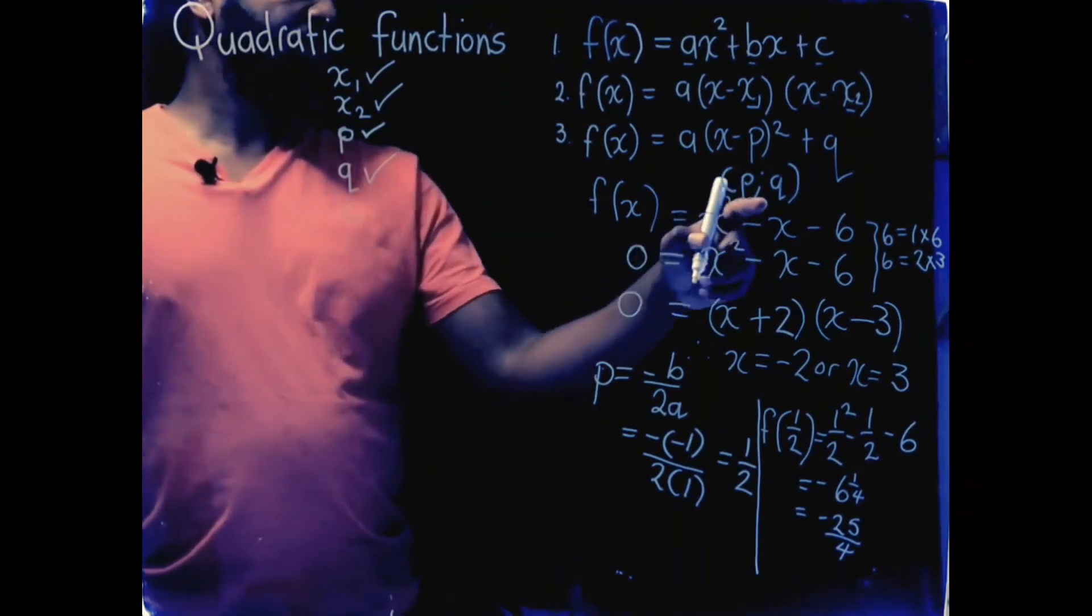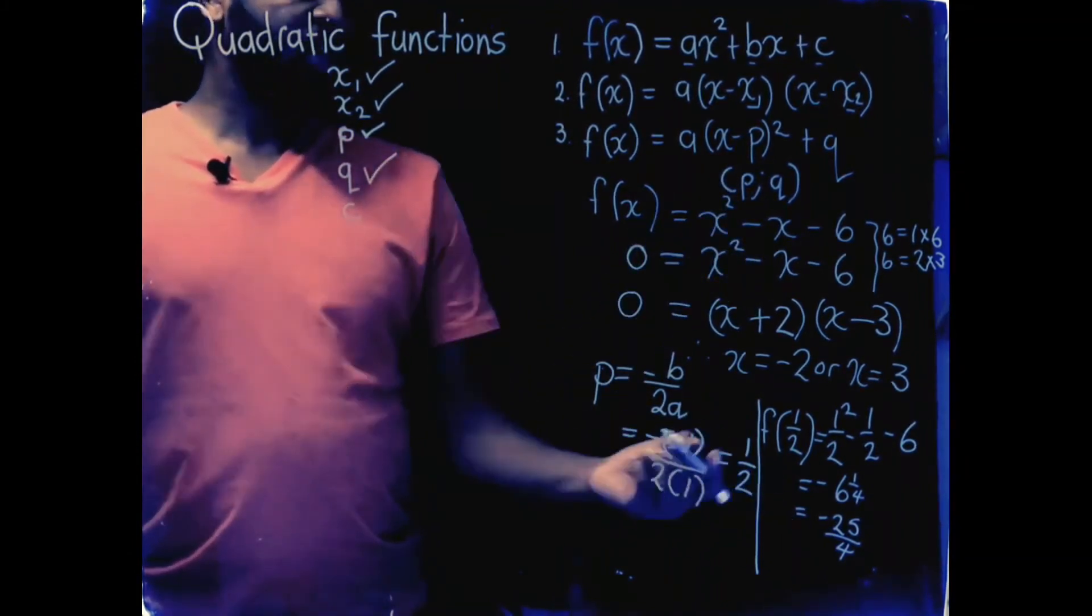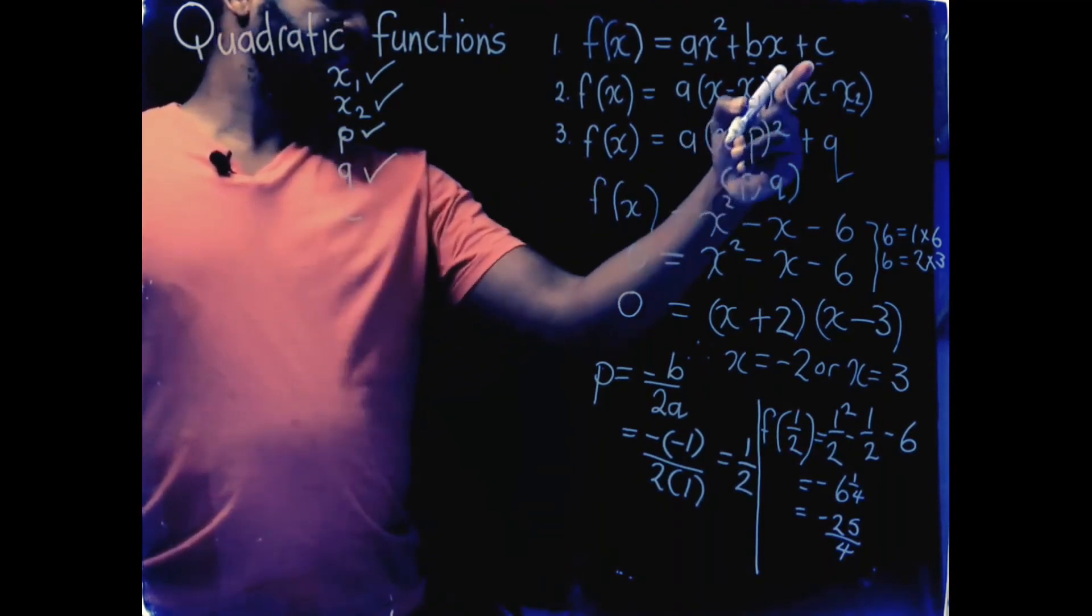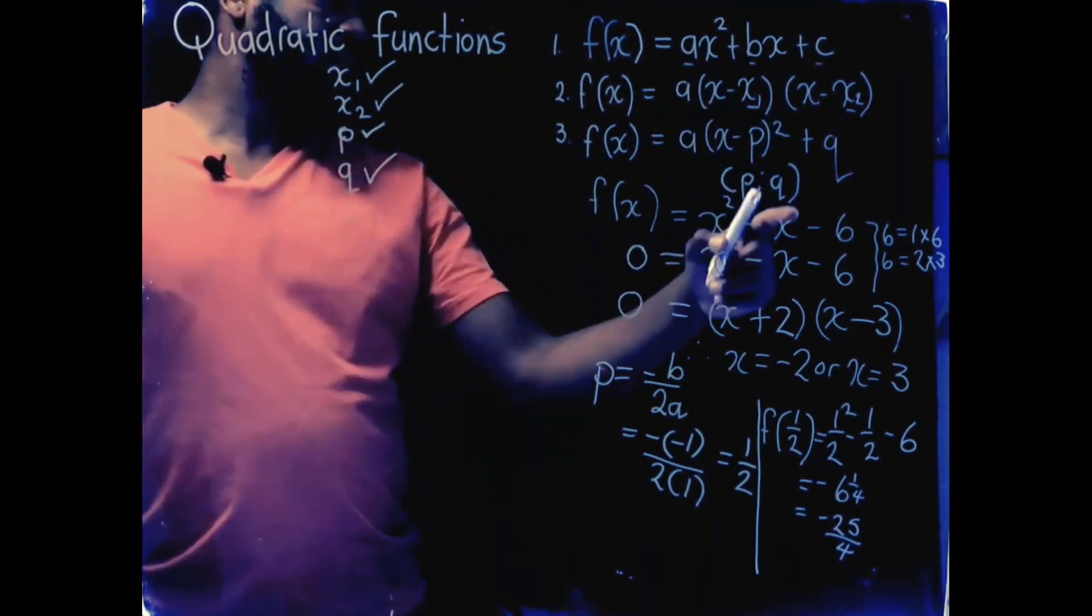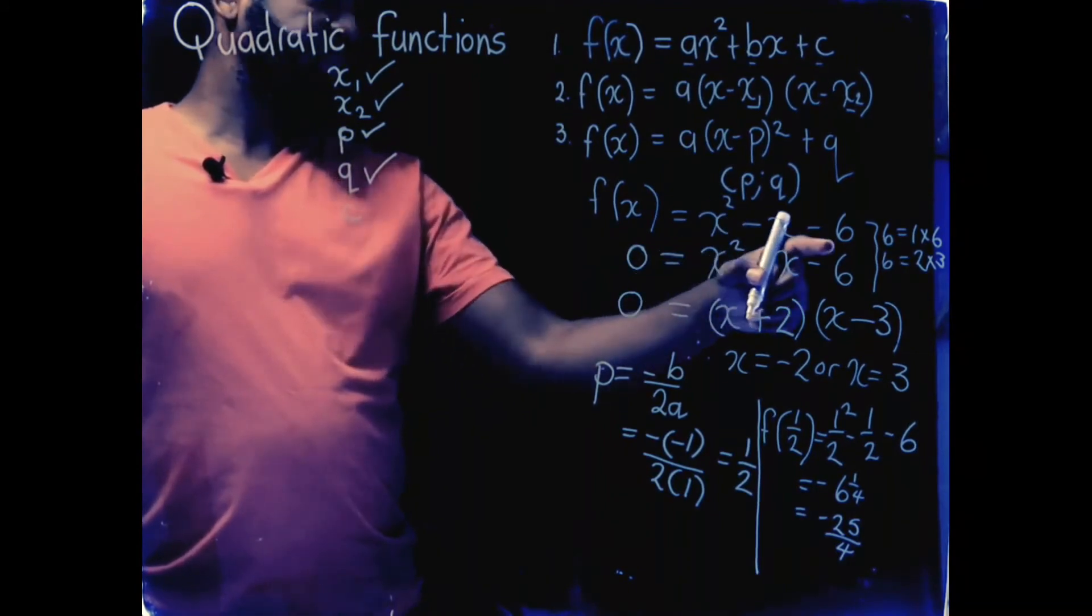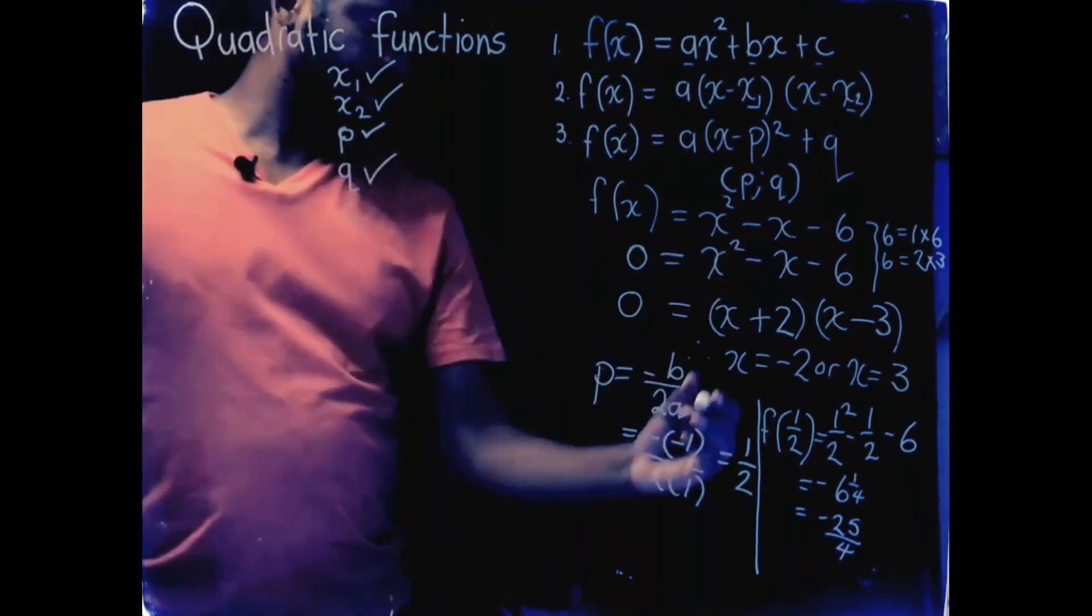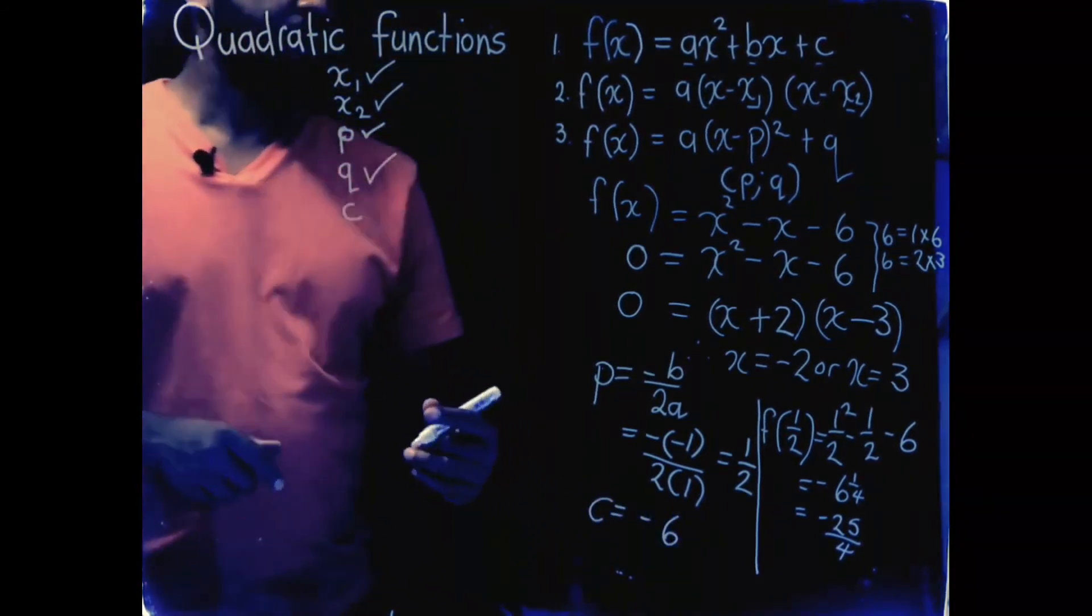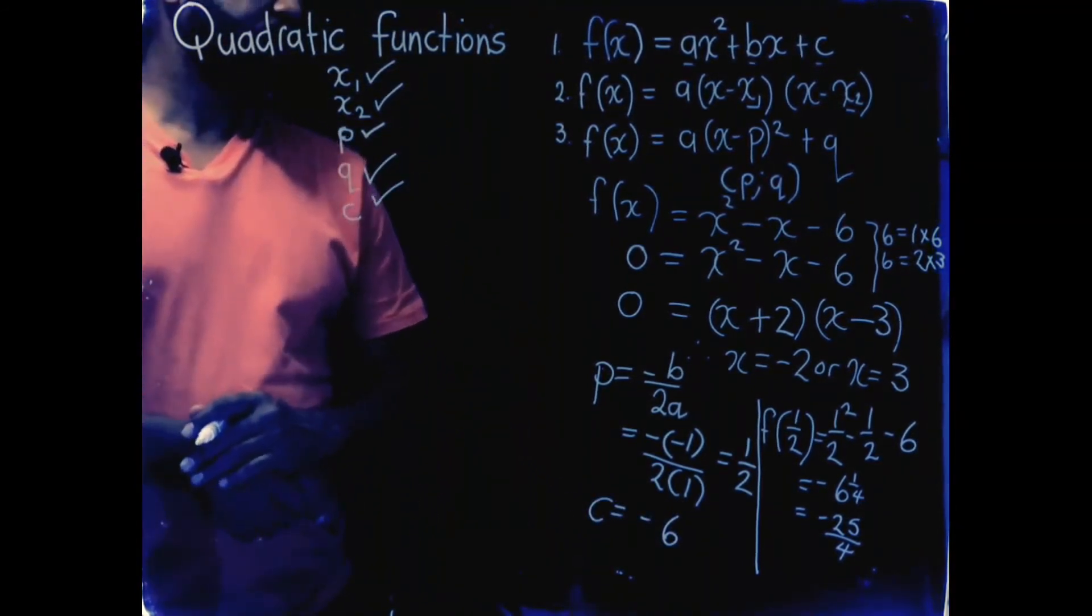Remember, p and q always go together. They are coordinate points. Then, the last value I need to get is the c value. I can easily see that c is when x is 0. So, if x is 0, c is minus 6. Now, I'm ready to plot my quadratic function. I've got my five values.